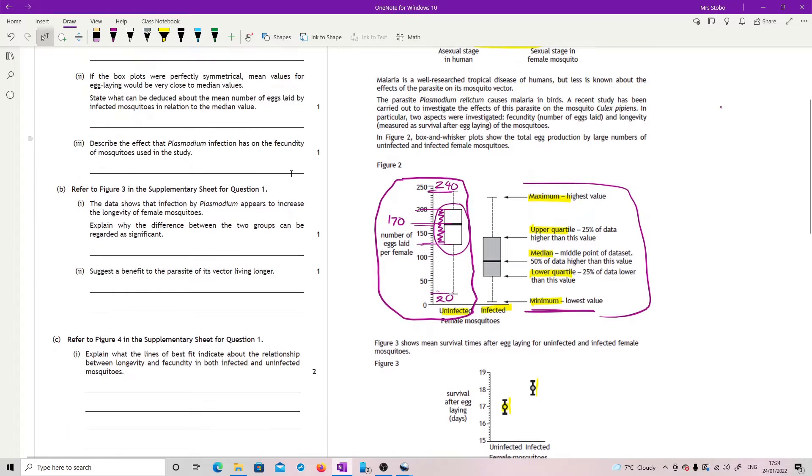Then it says if the box plots were perfectly symmetrical, mean values for egg laying would be very close to the median, which should make sense to you. State what can be deduced about the mean number of eggs laid by infected mosquitoes in relation to the median value. So here is our infected mosquitoes, here is our median value.